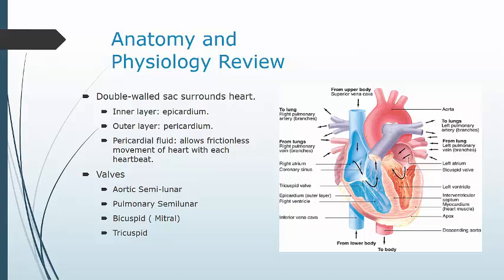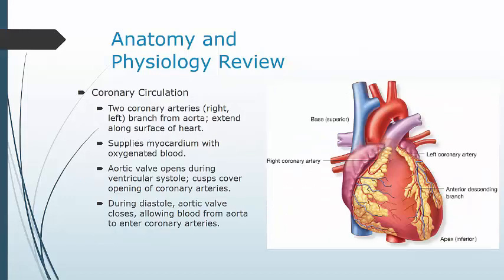Four major valves direct blood flow as the chambers contract. When the ventricles contract, the atrioventricular valves prevent blood from being forced backward into the atria. The mitral (bicuspid) valve sits between the left atrium and left ventricle; the tricuspid valve sits between the right atrium and right ventricle. Both are attached to papillary muscles via the chordae tendineae, which hold the valves in place. The aortic semilunar valve closes after left ventricular ejection, and the pulmonary semilunar valve closes after right ventricular ejection, both preventing backflow.